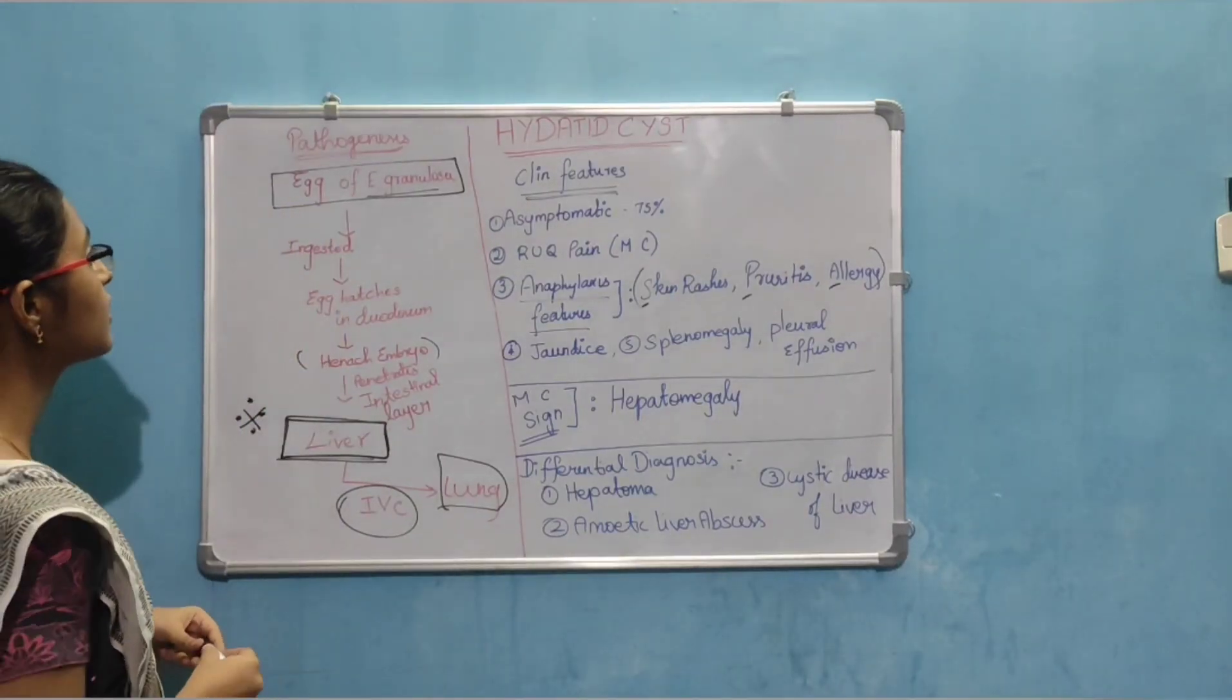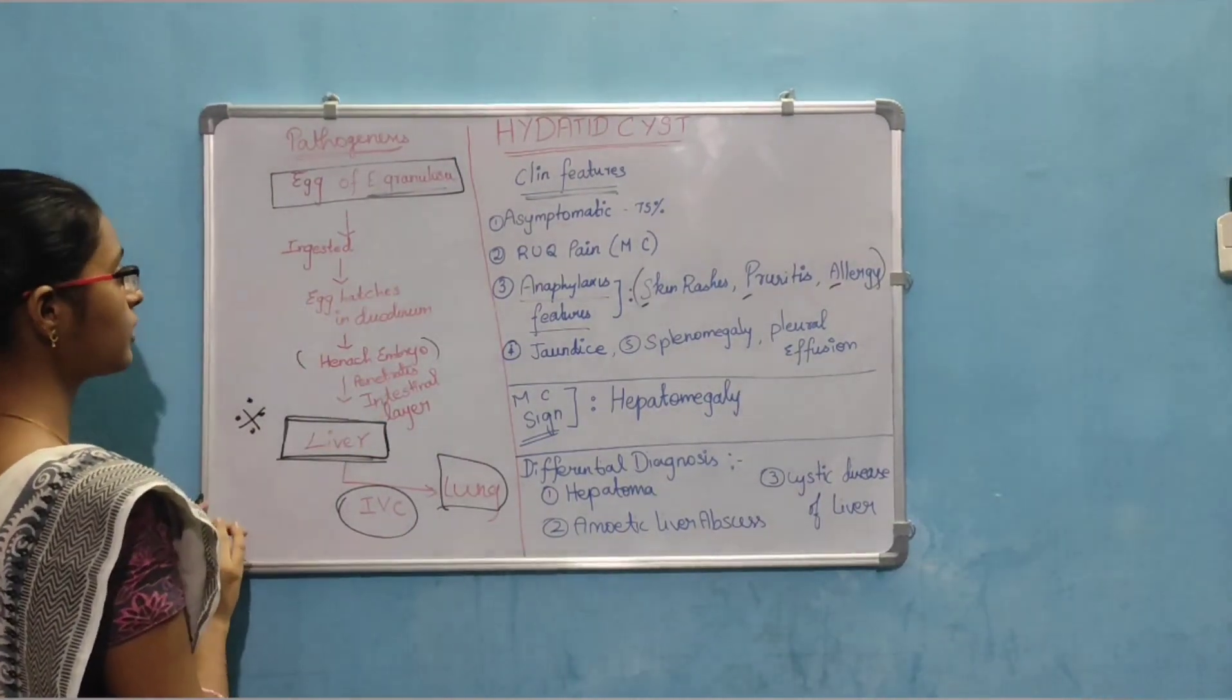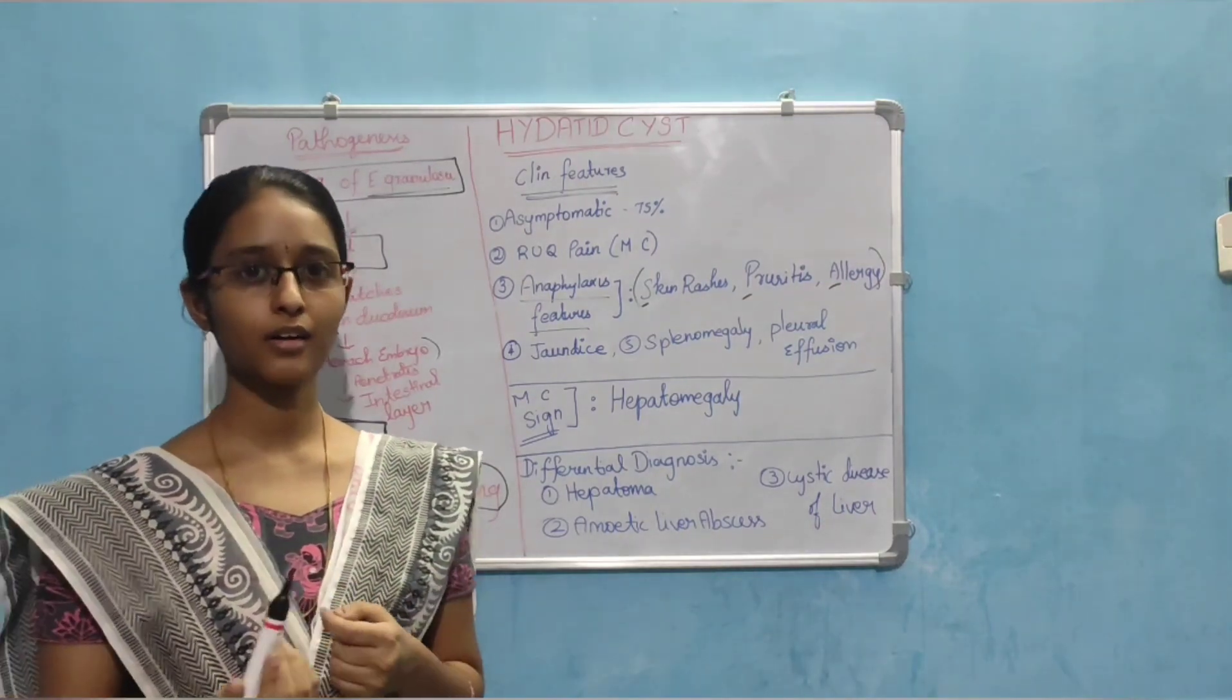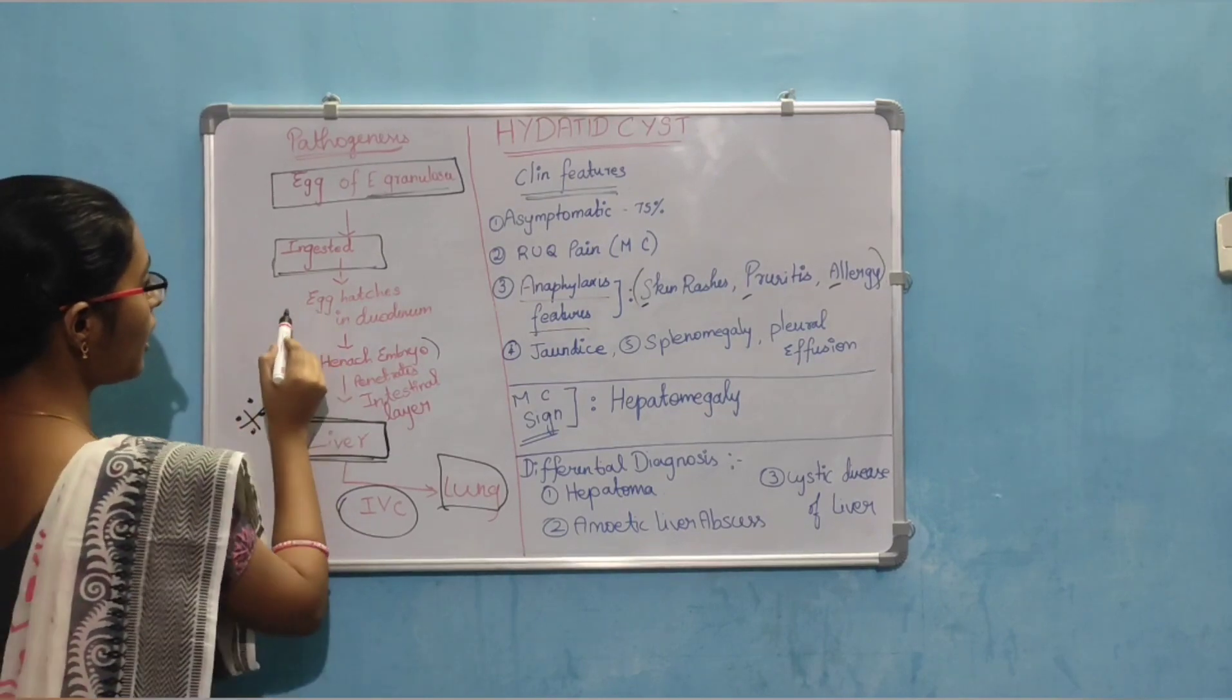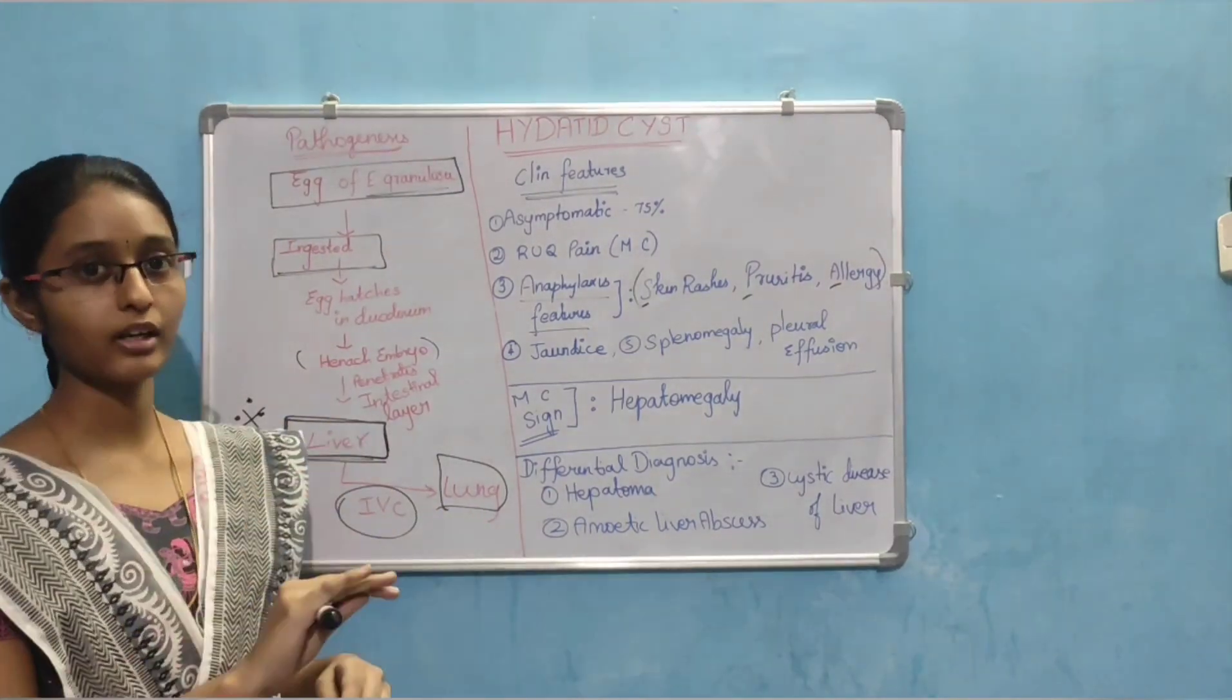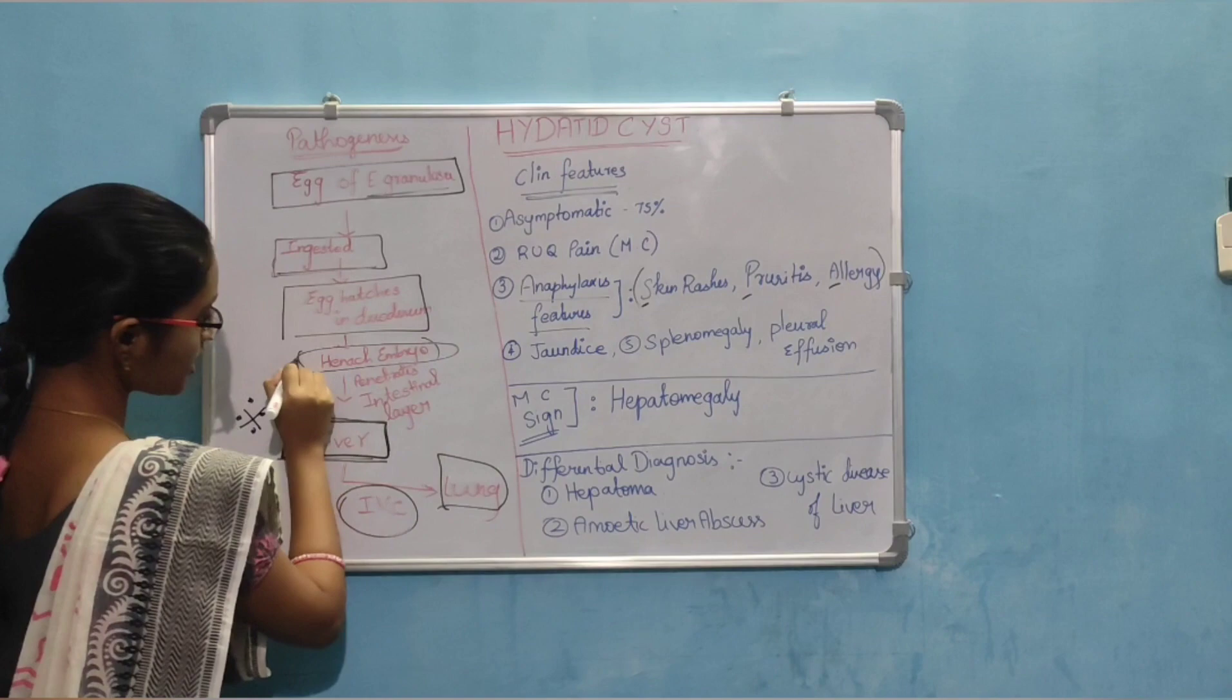Pathogenesis: egg of the echinococcus granulosa is ingested into our body through contaminated water or food. Through contaminated water or food it is ingested and then goes to the stomach and then to the duodenum. Through the esophagus it goes to the duodenum and it gets hatched. So egg hatches in the duodenum. Then it forms the hexanarch embryo.